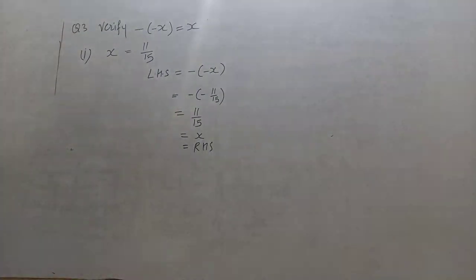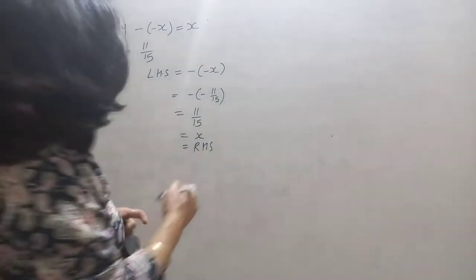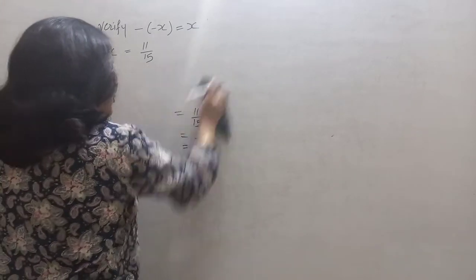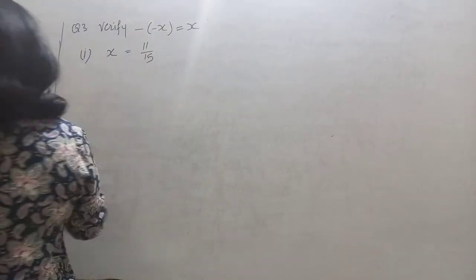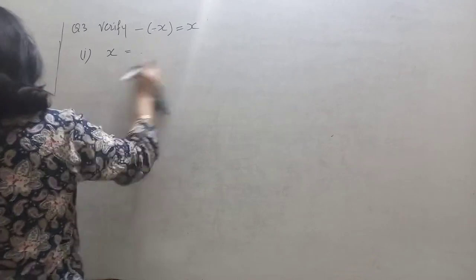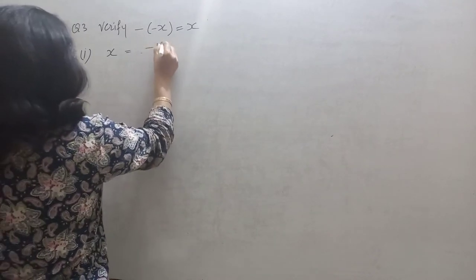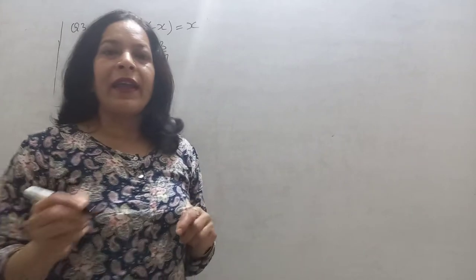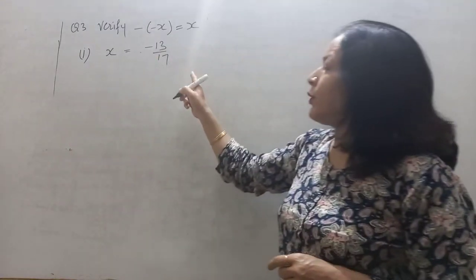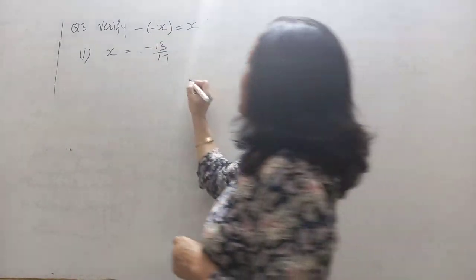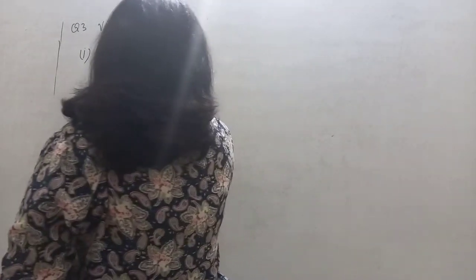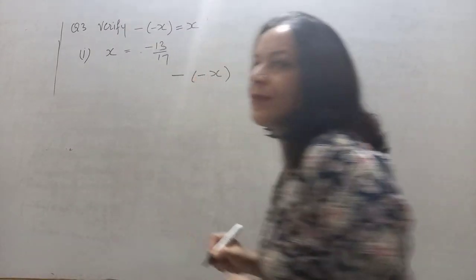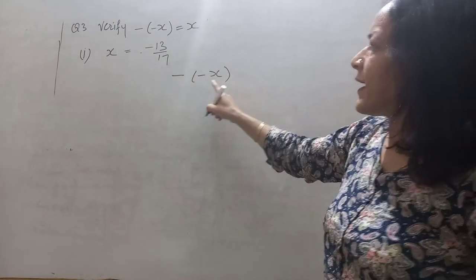Now the second part: we have been given the value of x equals minus 13 upon 17. Again, we take the left hand side: minus of minus x.